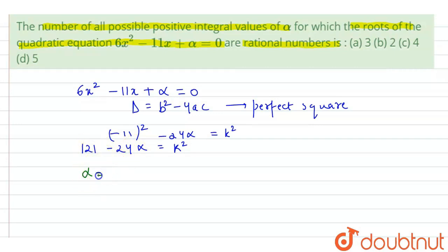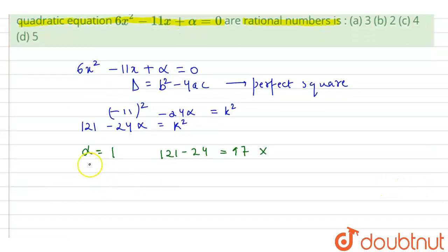First we put alpha equals 1. So this equals 121 minus 24 which is 97. This value is rejected because 97 is not a perfect square. Now alpha equals 2: we get 121 minus 48 which equals 73. Again, this is not a perfect square.